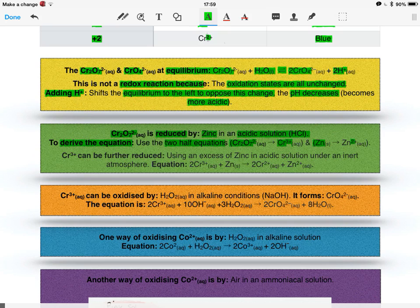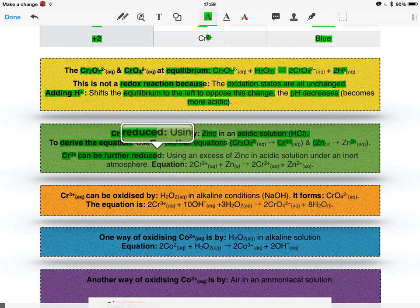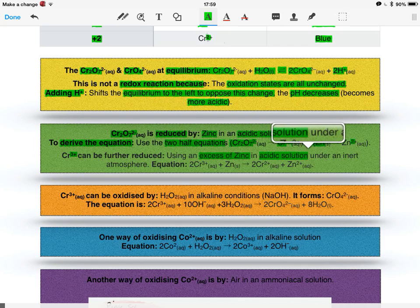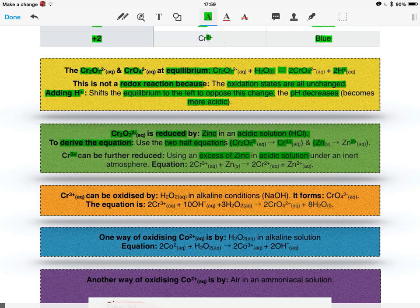But then, the chromium three plus can be further reduced, and this is using an excess of zinc, again, in acidified solution. However, this time, we have to do it under an inert atmosphere, and this is what I was talking about before with the chromium two plus ion, is it's very unstable, so it will oxidise in air back to the chromium three plus ion. Therefore, to prevent this, we have to do it in an inert atmosphere. The equation for this is quite easy to remember. It's two chromium three pluses, add zinc, forms two chromium two pluses, add zinc two plus.